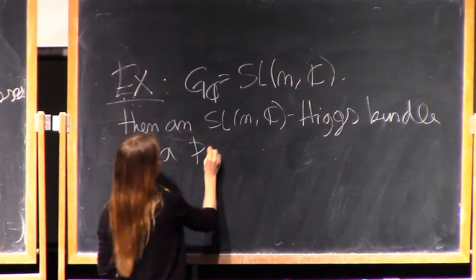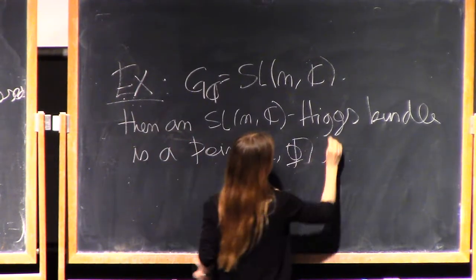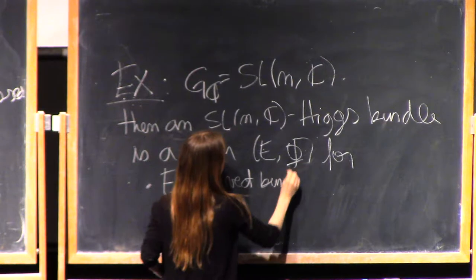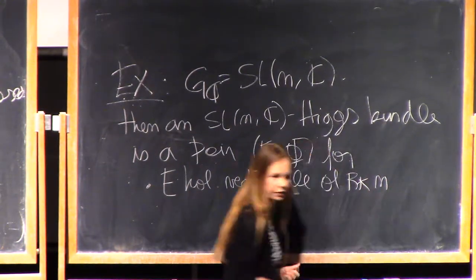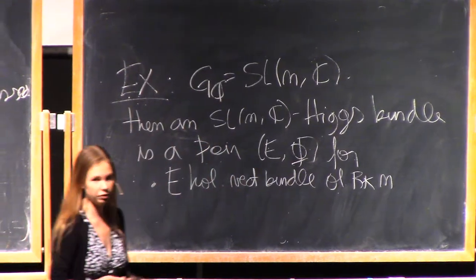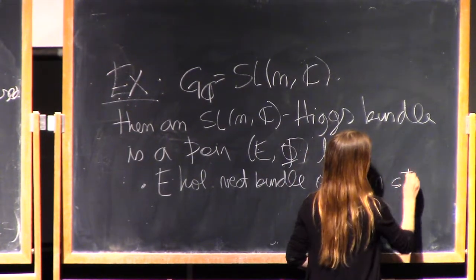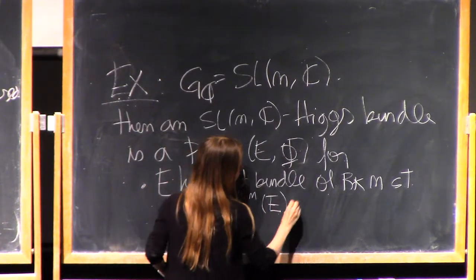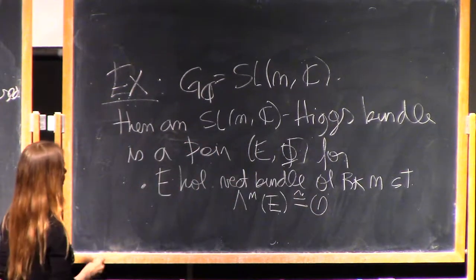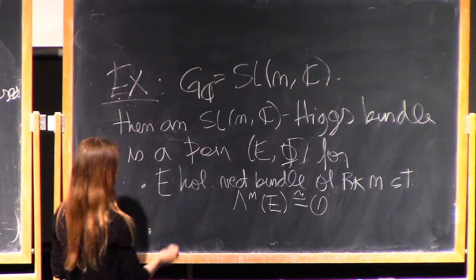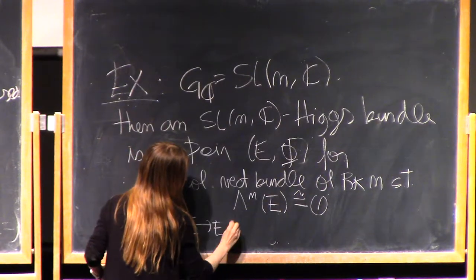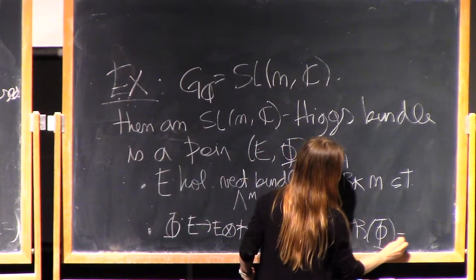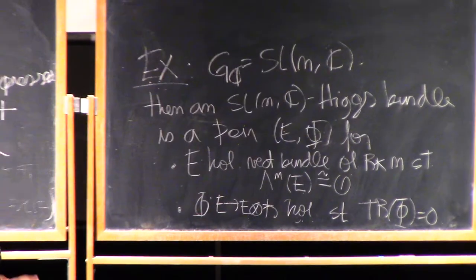A Higgs bundle is a pair (E, φ) for E a holomorphic vector bundle of rank N on the Riemann surface, such that the condition of the group having trivial determinant is reflected here: the determinant of the bundle, so the top exterior power of the bundle, is trivial. This is a line bundle and we ask for it to be the trivial line bundle. The Higgs field φ, which also has a trace as a matrix, is a holomorphic map from E to E tensored with K, such that the trace of the Higgs field is zero. So if you have a special linear group, this is what a Higgs bundle is.